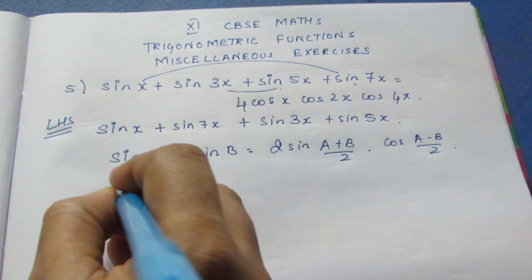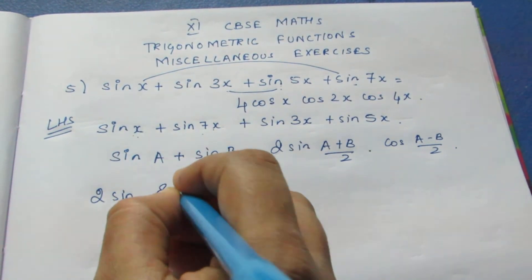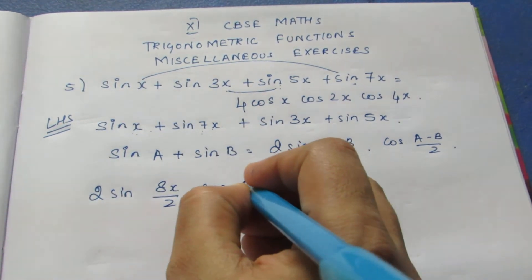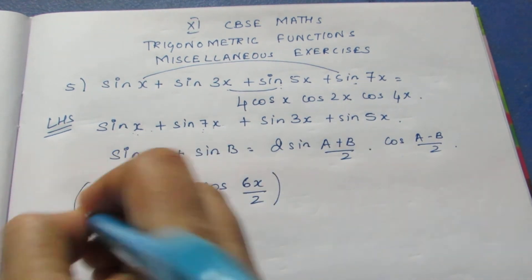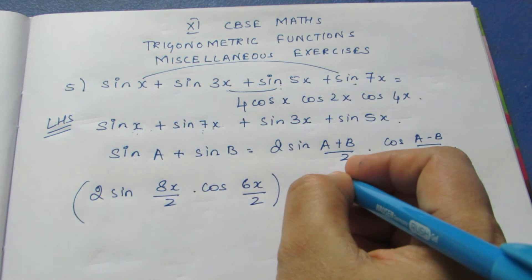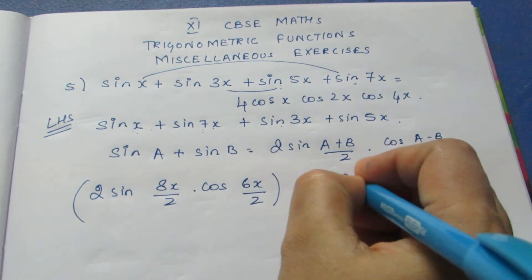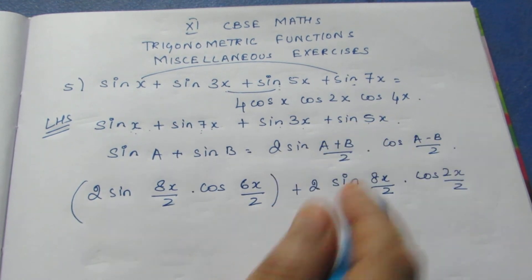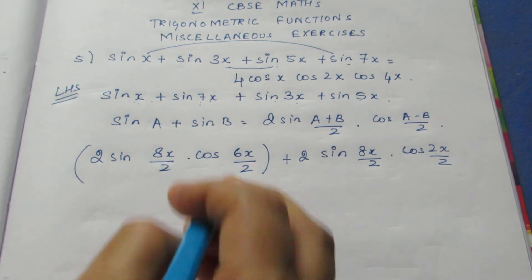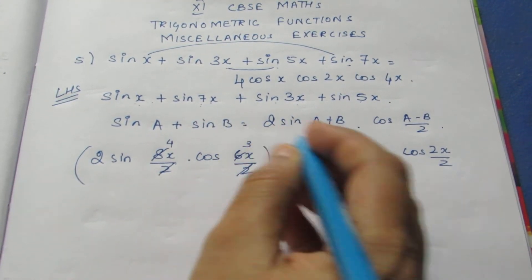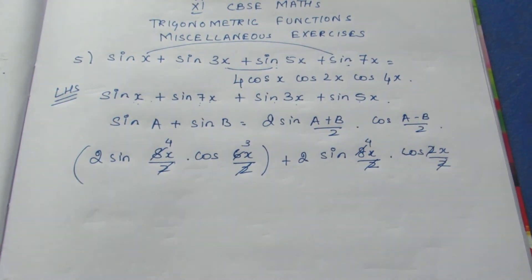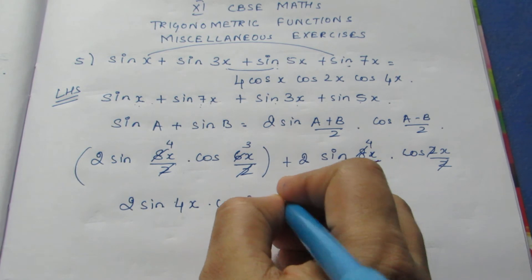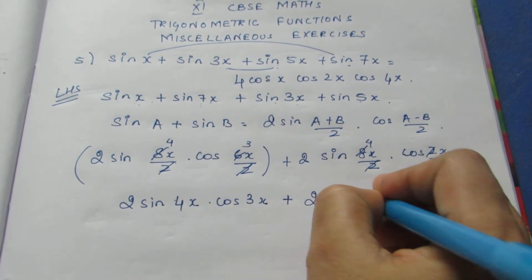Using the formula on the first pair: A + B = 8x, so (A+B)/2 = 4x, and 7 - 1 = 6x, so (A-B)/2 = 3x. For the second pair: (A+B)/2 = 4x, and 5 - 3 = 2x, so (A-B)/2 = x. After cancellation, we get 2 sin 4x · cos 3x + 2 sin 4x · cos x.